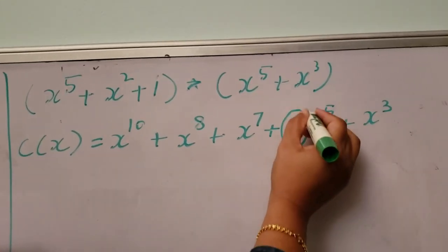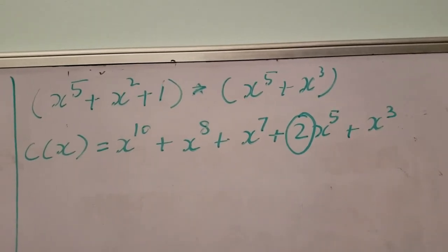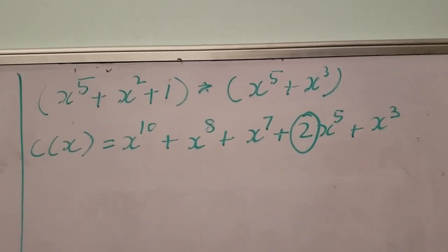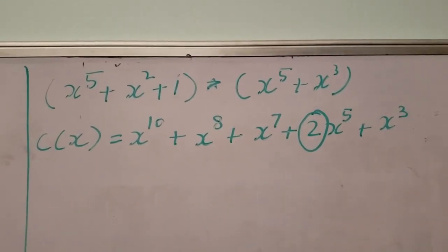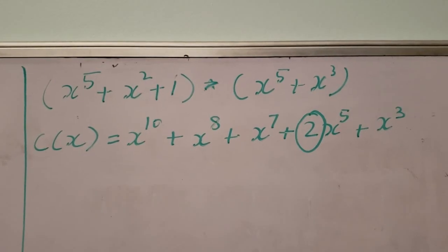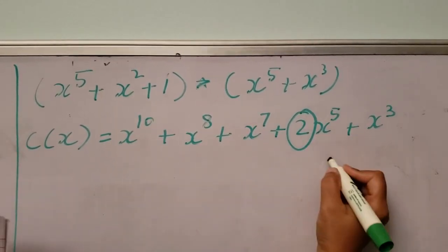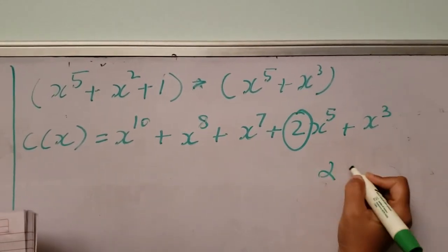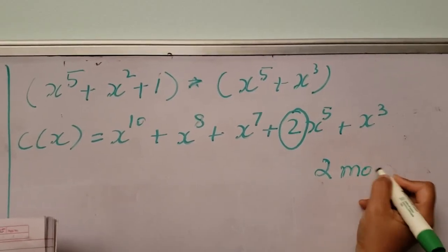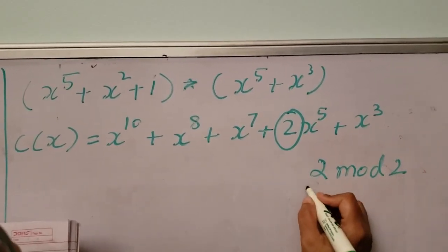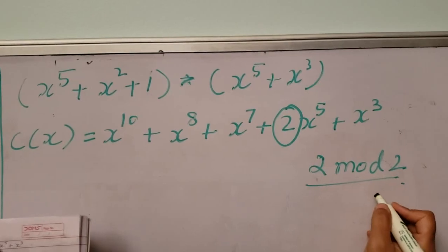You have to know here that the coefficient can only be 0 or 1. For the coefficient 2, we will find 2 mod 2, and 2 mod 2 is 0. So that term drops out.